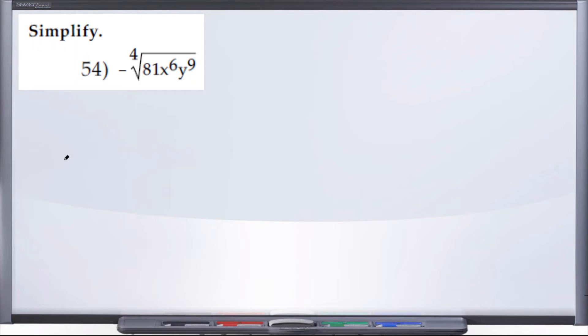Alright, 54. We are simplifying and we've been given negative radical, or the fourth root rather, of 81x to the sixth y to the ninth. As soon as I see the directions to simplify and I've been given a radical, what I immediately do is go ahead and right away break that given radical up into good stuff, bad stuff.